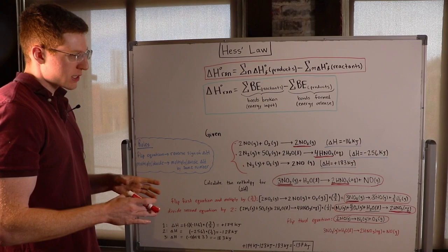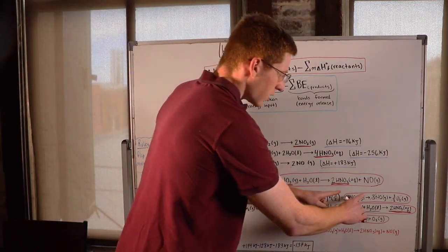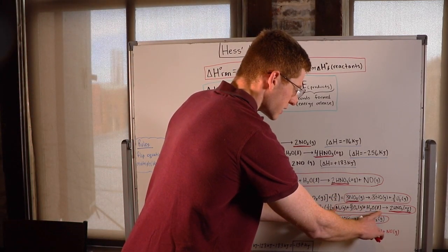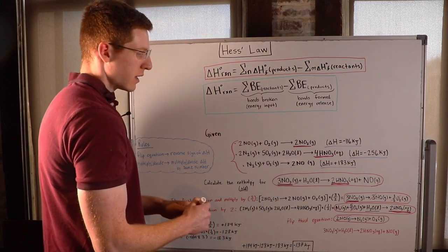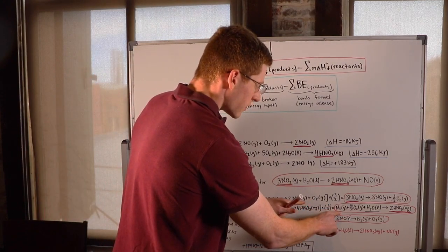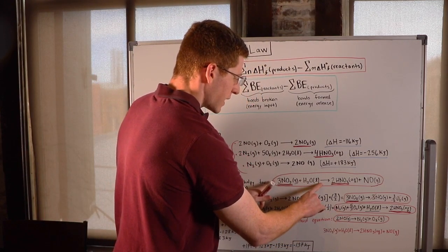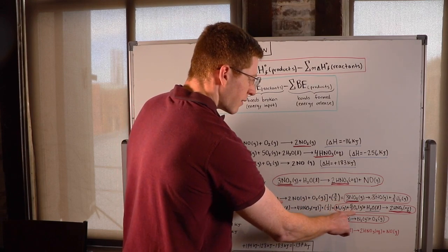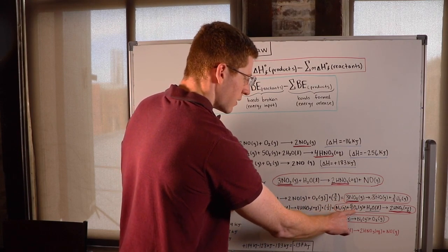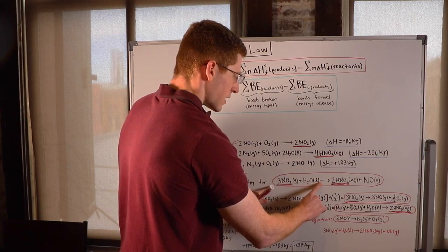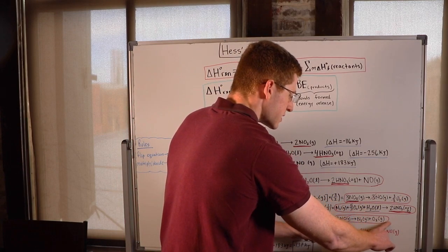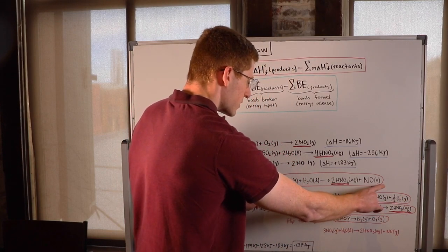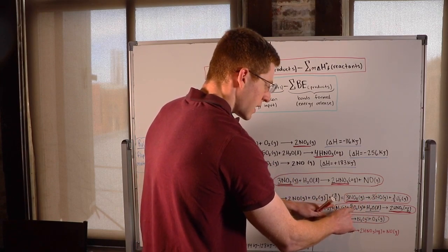Okay, so what do I do next? Next, I have some things on my reactant side, if you notice here, that I don't need. I have an N2 here that doesn't appear on my reactant side. Additionally, I have a 5 halves O2 here that doesn't appear on my reactant side. And remember, at the end I'm going to add all of these together and hope to end up with this. So I need to somehow cancel these out.